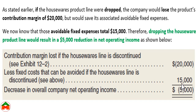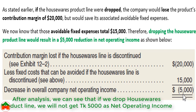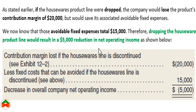The contribution margin of the Housewares product is $20,000. If we deduct only the relevant cost of $15,000 from the contribution margin, we get $5,000. If we drop this product, this $5,000 will be lost by the company. Therefore, dropping the Housewares product line would result in a $5,000 reduction in net operating income. Based on this differential analysis, we should not drop the product.